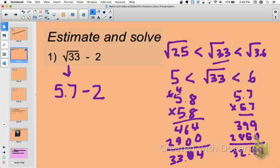So, now I'm going to write my second line of work where I'm substituting in 5.7 as my value for the square root of 33, and I need to subtract 2 from that. Now, one thing I need to remember about adding and subtracting decimals is that my decimal point needs to be lined up. So, 5.7 minus 2 is the same as 5.7 minus 2.0. Now, I can go ahead and subtract, and my solution to the problem is 3.7.